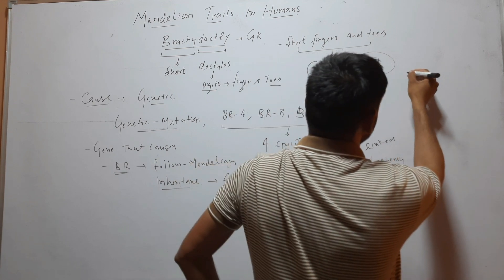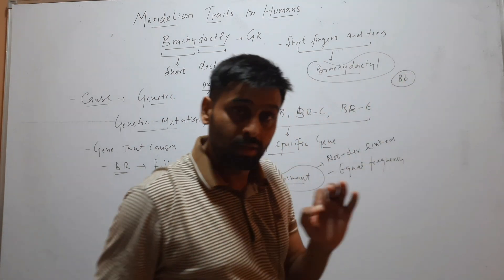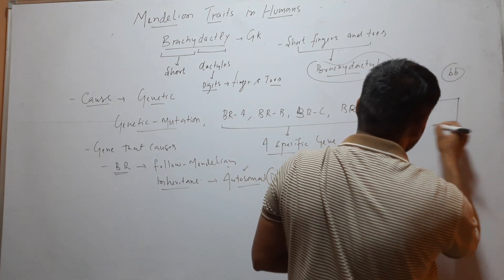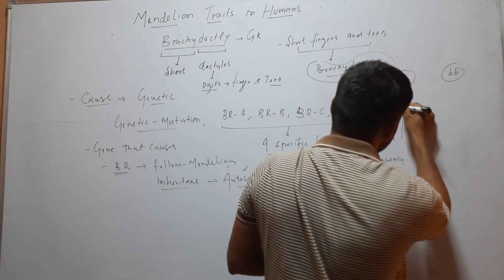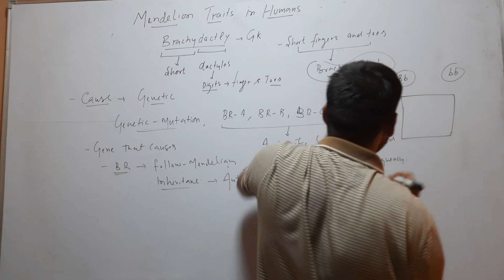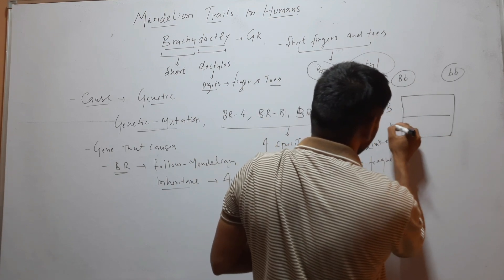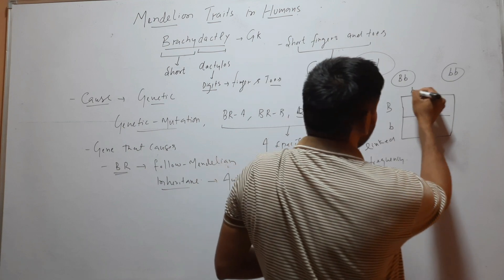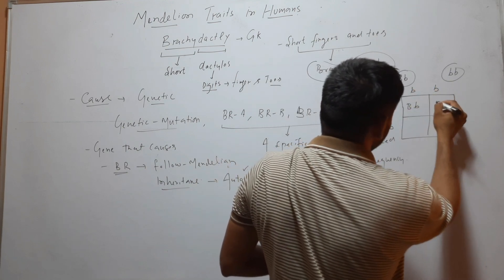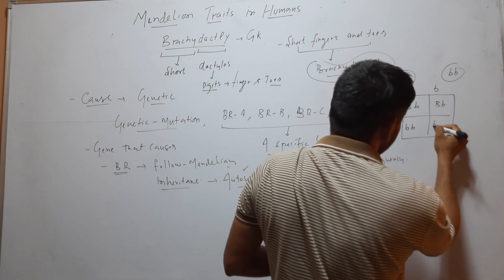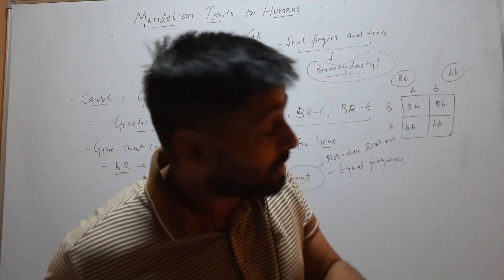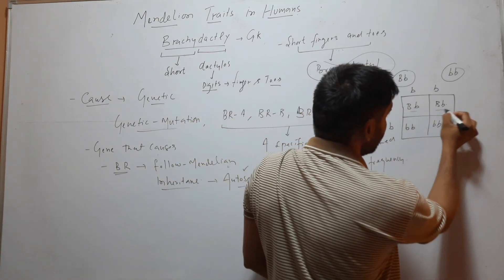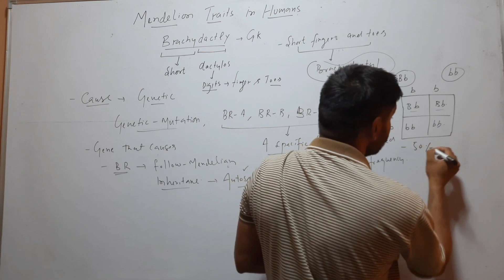Suppose in a couple, one person has Brachydactyly and the other is normal. Here I am drawing a Punnett square. The mutated gene is shown as capital B because it is dominant, and the normal allele is small b. So the cross is Bb × bb. You can see that out of 4 offspring, 2 have Brachydactyly — so 50% of their children will be affected.